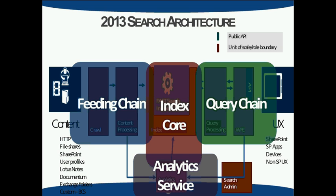Another change on the content processing side is there's now an API that enables calling into a web service. In 2010 and in FAST, you had the ability to extend the content processing pipeline and create your own custom pipeline for custom data sources. In 2013, that is replaced with the ability to call out into a web service API, so all that processing now gets done outside of the content processing component, and the web service is responsible for doing that work and sending information back.